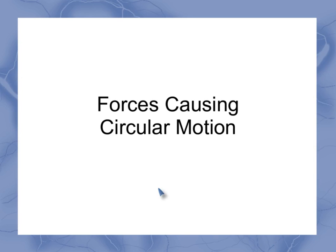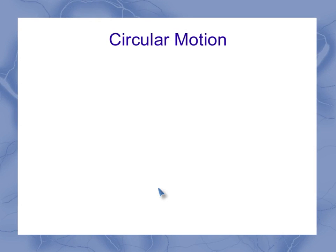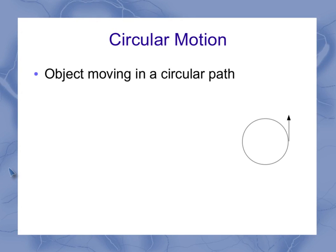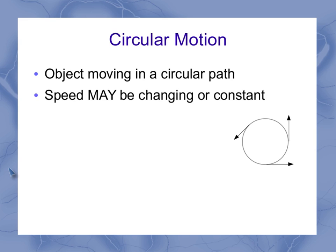So now we talk about forces causing circular motion. In previous videos, we've looked at circular motion and said that if I have an object moving in a circular path, its speed may be changing or constant, but its direction is changing. Every point around the circle is going in a different direction.